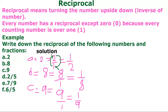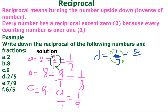Now D: we have two over five. Two over five is already in fraction form. The two is the numerator and the five is the denominator. So for the reciprocal, there is no need to convert — it's already in fraction. You turn this number upside down, and the final answer will be five over two. For E: the reciprocal of seven over nine is equal to nine over seven.